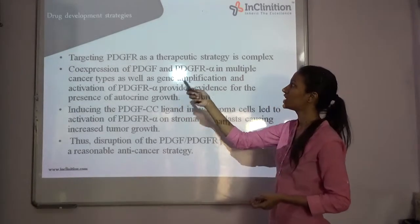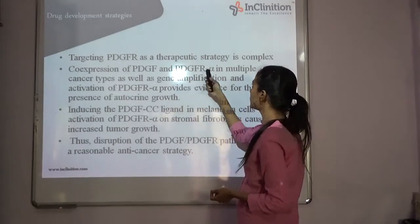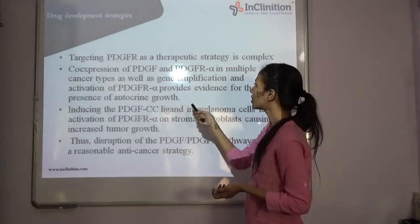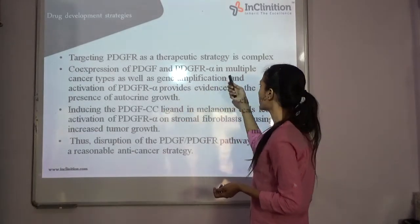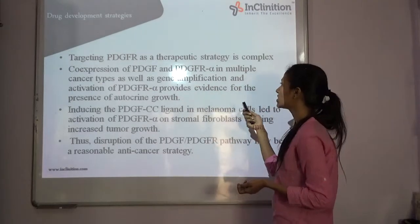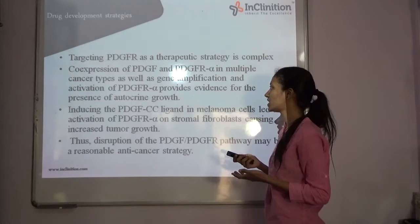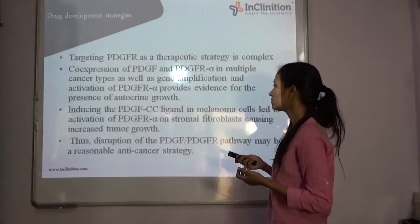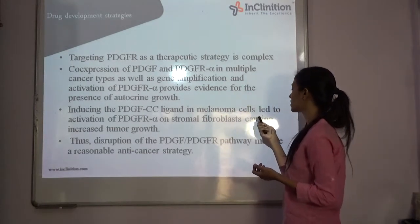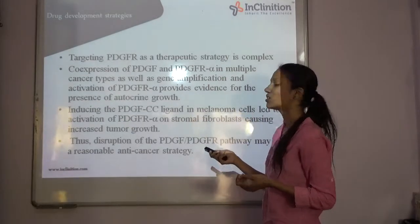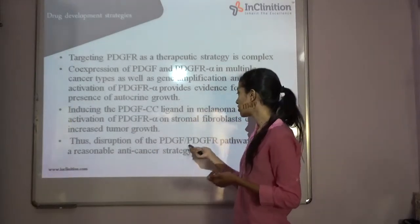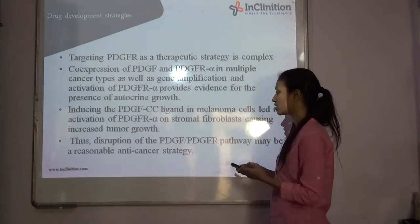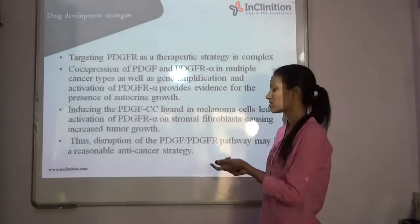These are the drug development strategies. Targeting PDGFR-alpha as a therapeutic strategy was a bit complex in the beginning. The co-expression of PDGFR-alpha in multiple cancer types, as well as gene amplification and activation of PDGFR-alpha, provides evidence for autocrine growth. It is also relevant in melanoma cells. The disruption of the PDGF and PDGFR pathway may be a reasonable anti-cancer strategy.